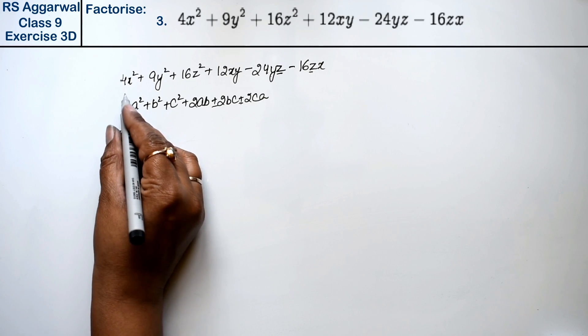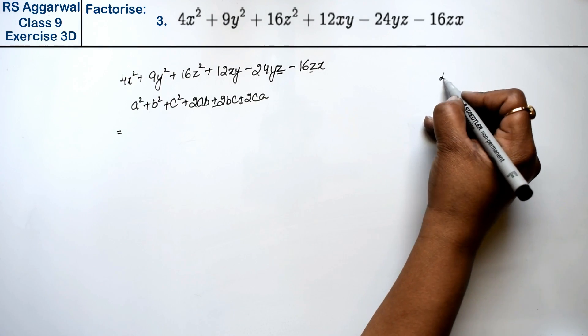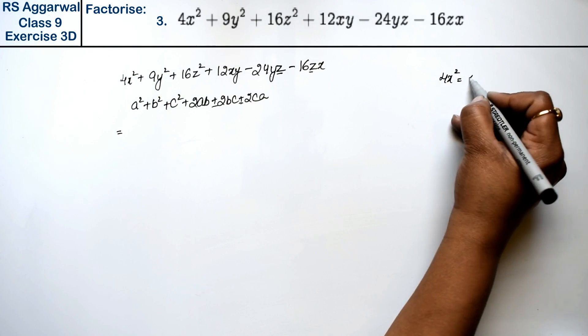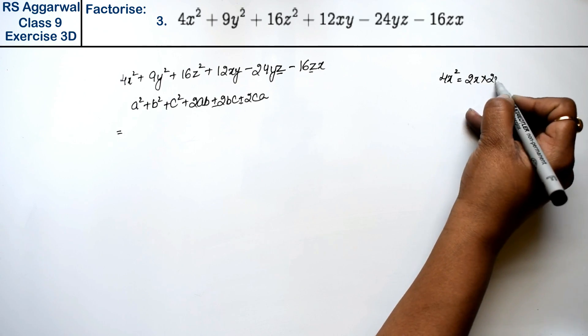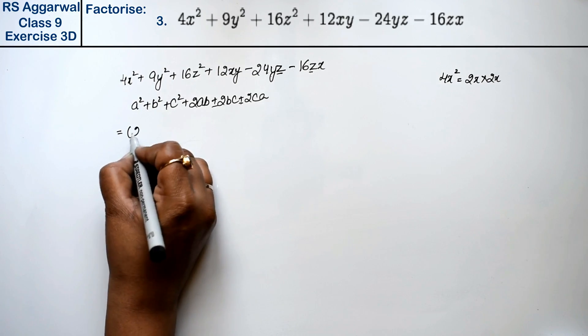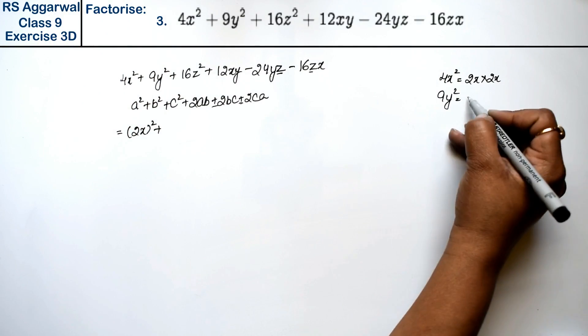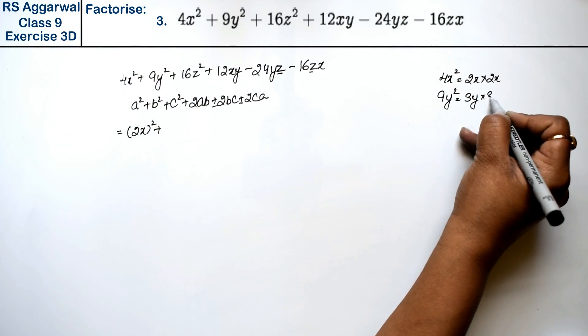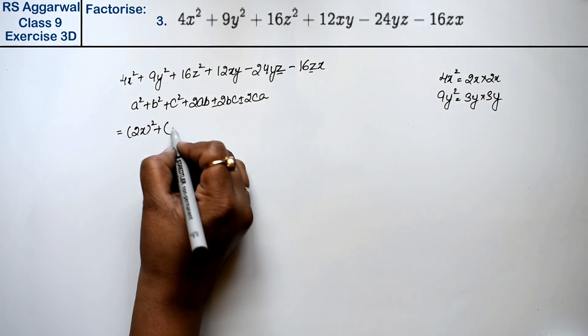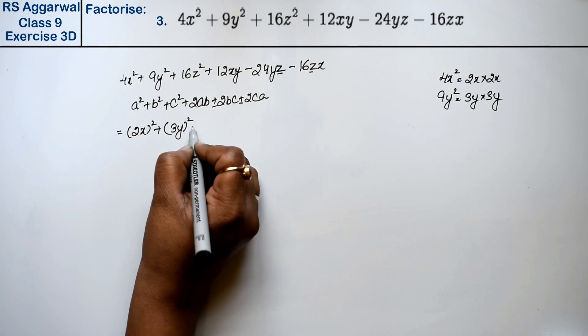Now see, how can we write 4x²? 2x into 2x, so that means it will be 2x whole square. Now what can we write 9y²? 3y into 3y, so that means it will be 3y whole square.